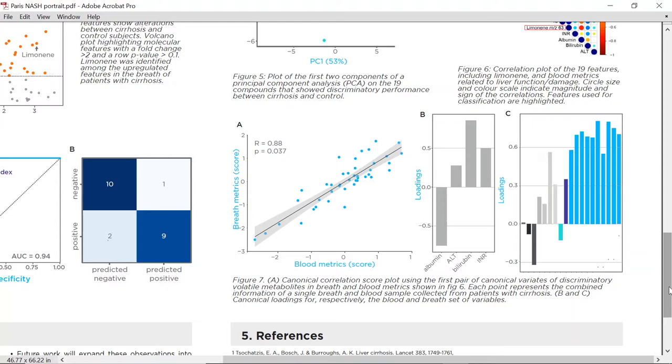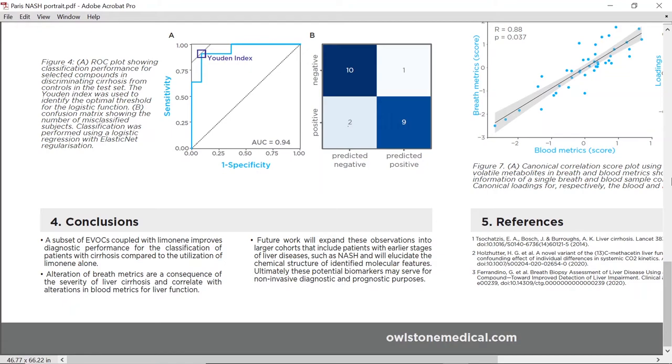The loadings indicate that bilirubin, albumin and INR are the most important blood variables driving this correlation, and several breath variables provide similar contribution to that of limonin. In conclusion, we found other breath biomarkers that coupled with limonin improve classification performance for cirrhosis, and that alterations of breath compounds correlate with cirrhosis severity.